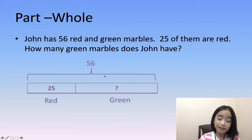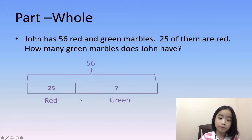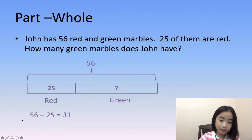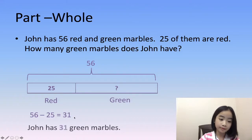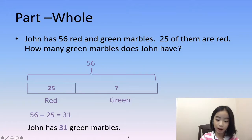From here we know that this is a subtraction problem. 56 minus 25 equals 31. John has 31 green marbles.